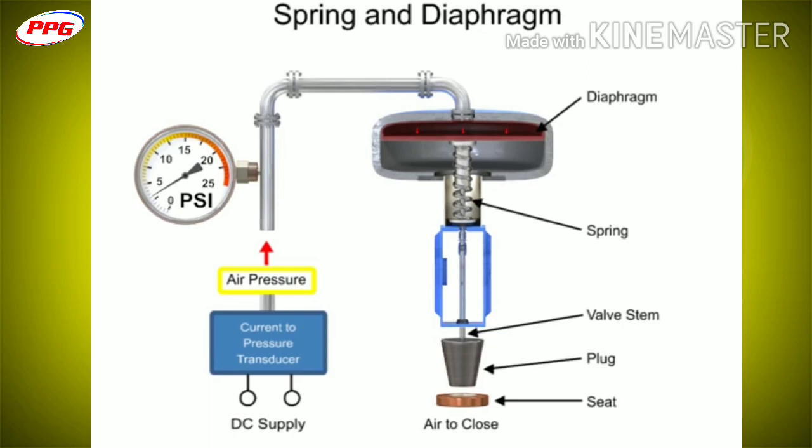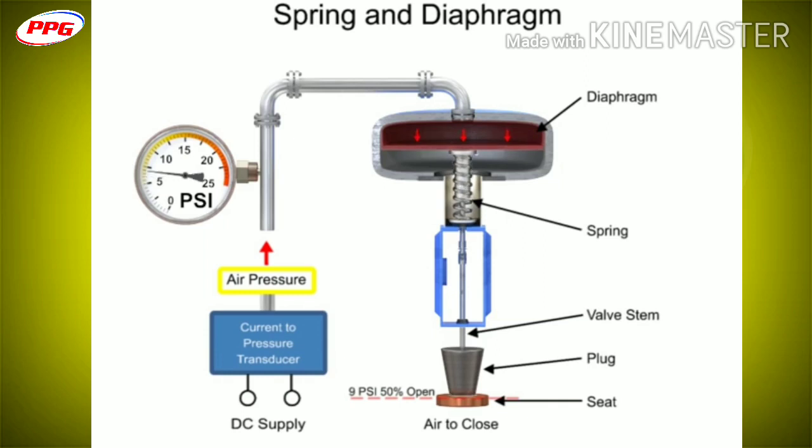For example, a pressure of 9 PSI applied to the diaphragm moves the spring and valve stem to 50% of operating range.